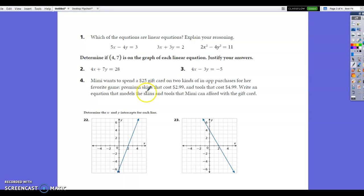So just like before, we can use any variables we want. But we know that this one's going to cost $2.99. And we can just call it S for skins. And then this one, tools, let's call it T, cost $4.99. So you don't have to put the number first, but it makes more sense if you put the number first. So $4.99 T. And then that is going to equal, she has $25 gift card to spend. So that's going to equal $25. So you're just pulling the information right out of the problem in order to write the equation.